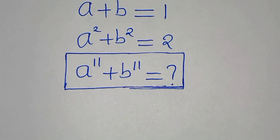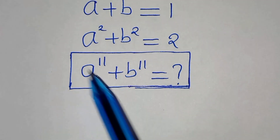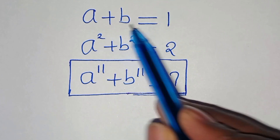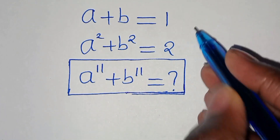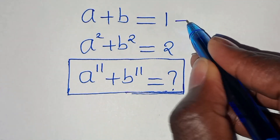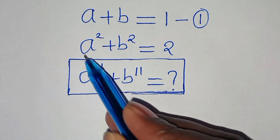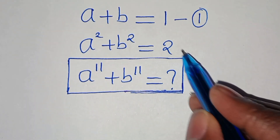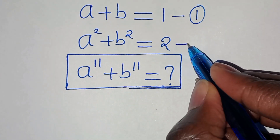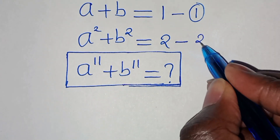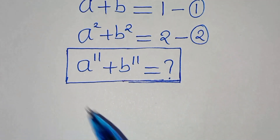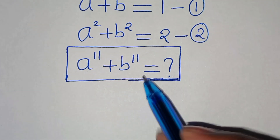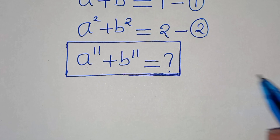Hello everyone, you're welcome to solve this nice algebra problem. We have a plus b equals one — let's call this equation one — and a squared plus b squared equals two — let's call this equation two. So what is the value of a to the power of 11 plus b to the power of 11?